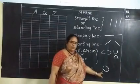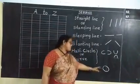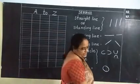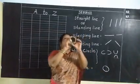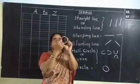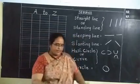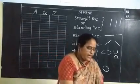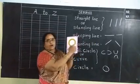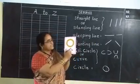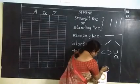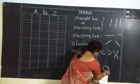And the next one is up curve. What is this? Up curve. And this is down curve, or down half circle. What is this? Down curve. This is up curve and this is down curve. These are the half circles. And the next one is circle — full round. What is this? Circle. Full circle.